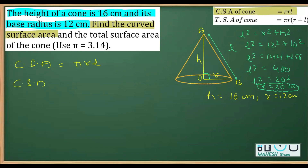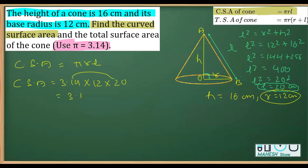Now applying the CSA formula with π = 3.14: CSA = 3.14 × 12 × 20. First, 3.14 × 20 = 62.8, then 62.8 × 12 = 753.6 centimeters square.